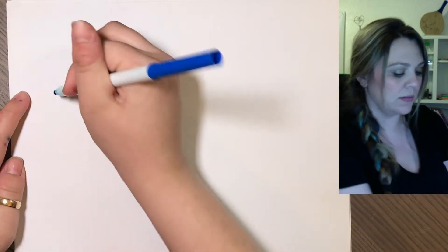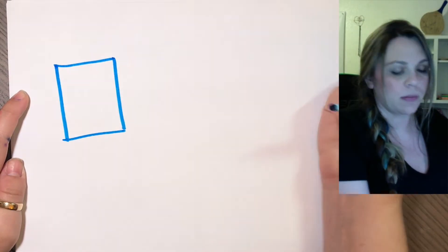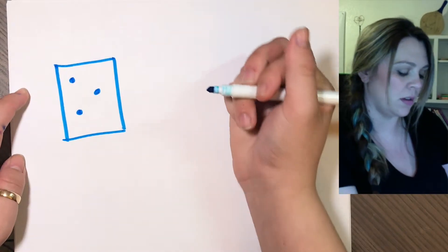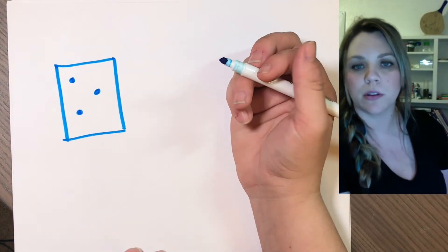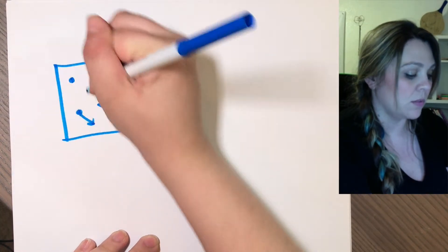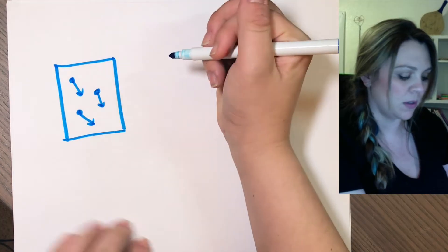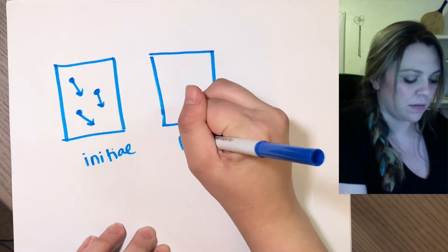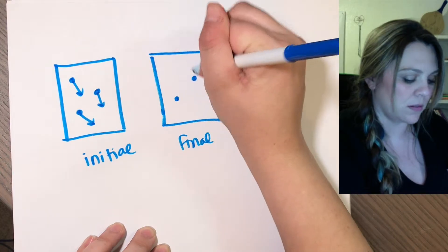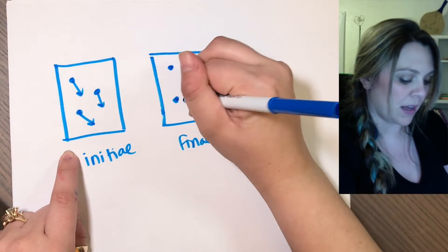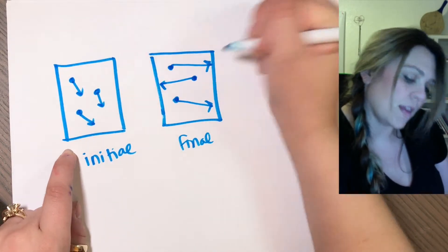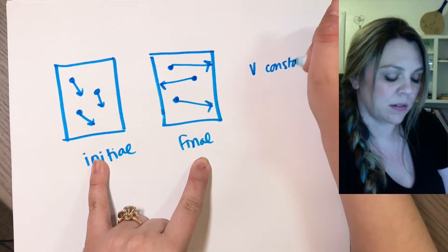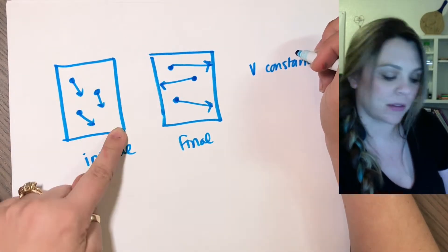Quickly, here's how we draw gas particles: you draw them in a closed container with some kind of arrow showing their speed. You might compare initial versus final conditions. If the box size is about the same and the arrows are about the same size, the volume is constant and the amount is also constant.